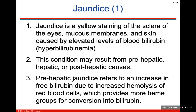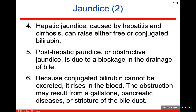Pre-hepatic jaundice refers to an increase in free bilirubin due to increased hemolysis of red blood cells, which provides more heme groups for conversion into bilirubin. Hepatic jaundice can raise either free or conjugated bilirubin. Post-hepatic jaundice is usually due to a blockage in the drainage of bile — because bilirubin cannot be excreted, it will rise in the blood. This obstruction may result from a gallstone, pancreatic disease, or stricture of the bile duct.